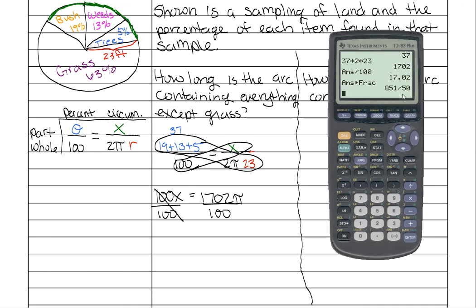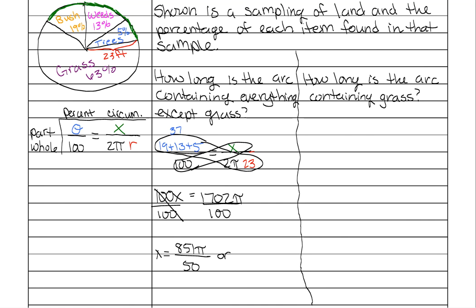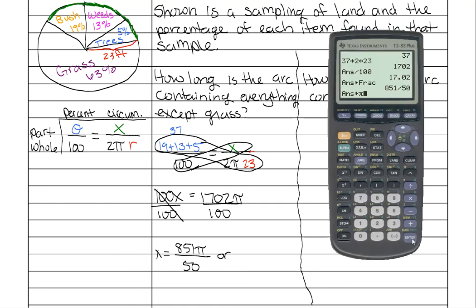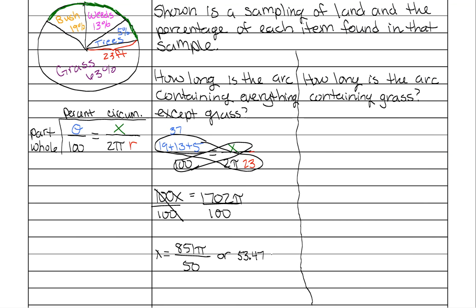which comes out to 851 over 50. So 851π over 50. Find the estimation of that, which is 53.47. And that is in feet. And that's our answer for our first one.